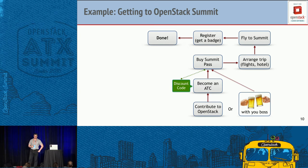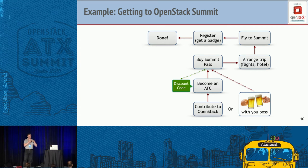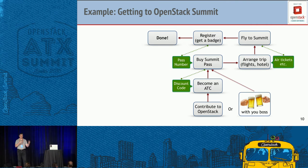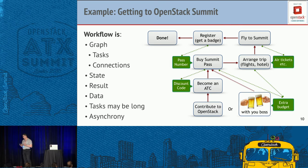Some steps in this workflow may be associated with data. For example, when you become a technical contributor you get a discount code, which is consumed later when buying your summit pass. The pass number itself is data from that step. Arranging the trip produces airline ticket numbers and hotel reservation numbers. Having a good relationship with your boss creates extra budget usable at later points.